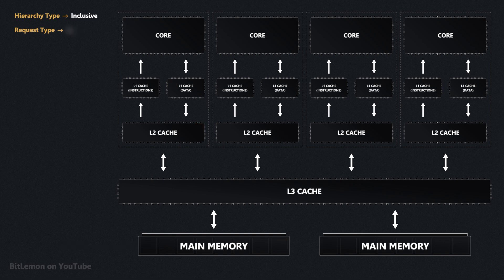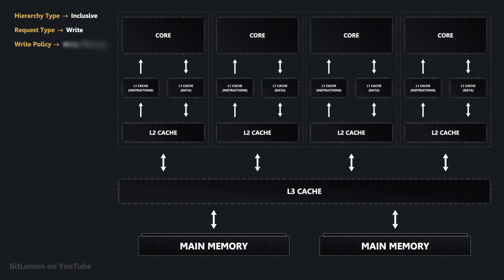When the CPU issues a write request, how the cache handles it depends on the system's write policy. In the write-through policy, data written to L1 immediately propagates to L2, L3, and main memory, ensuring all levels remain synchronized during a write operation. In contrast, the write-back policy delays updates to lower levels of the hierarchy. If a data block is modified in L1, it is marked as dirty, and the update to lower caches or main memory only occurs when the data block is evicted from L1.